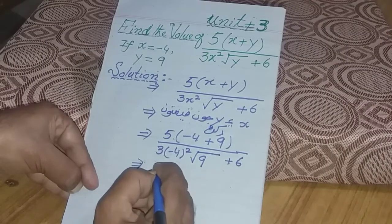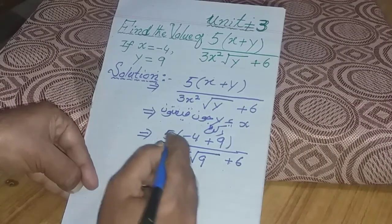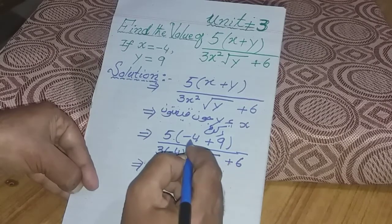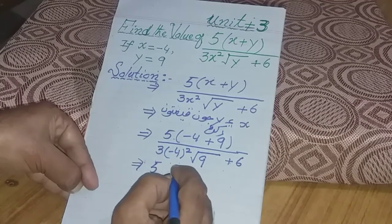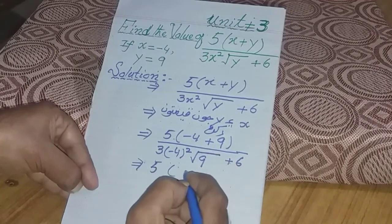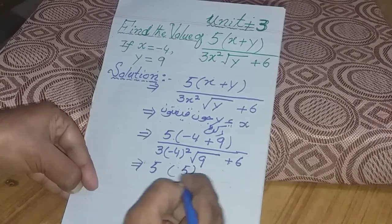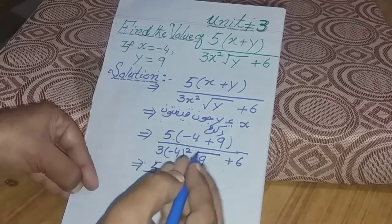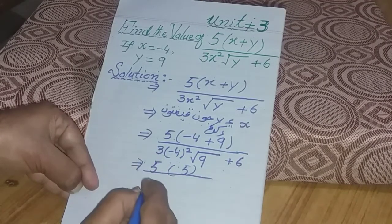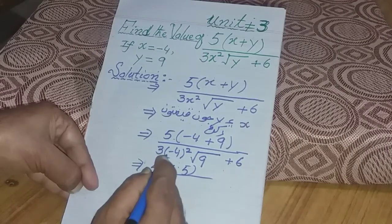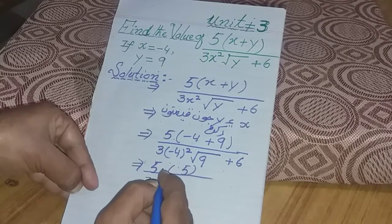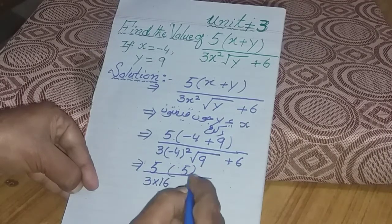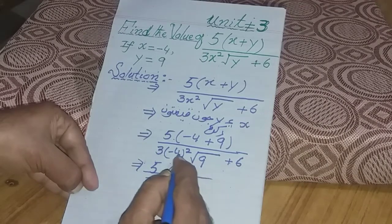5 brackets, 3 brackets. Minus 4 plus. When we square minus 4, minus times minus gives plus. So the square changes the sign. The radical sign square root.